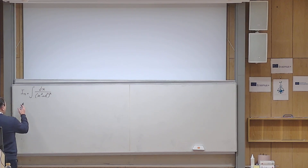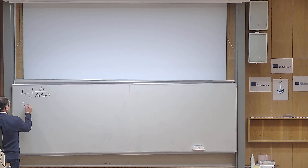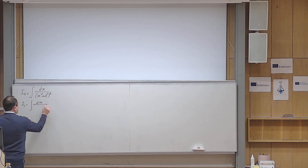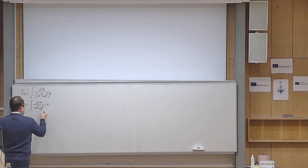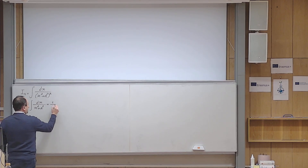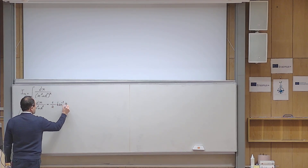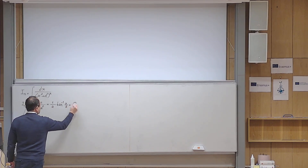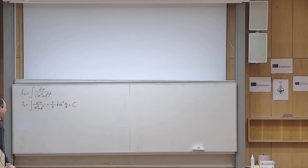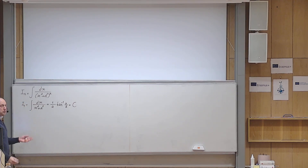For example, if I write I sub 1, this means I replace n with 1, and I get this integral — which is a very famous integral. The answer becomes 1 over a times tangent inverse of x over a, plus a constant c. So calculating I_n when n equals 1 poses no problems.